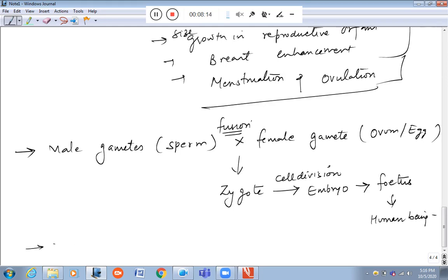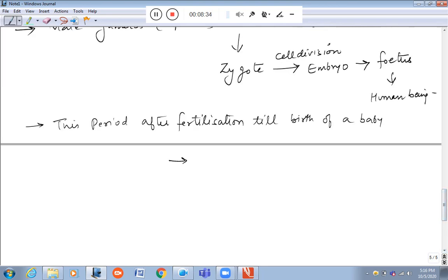This period after fertilization till birth of a baby is about 9 months, which is the complete gestation period.